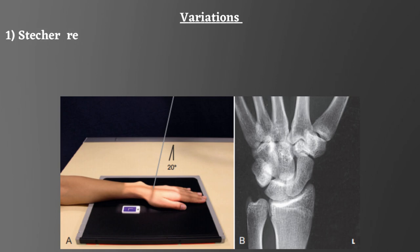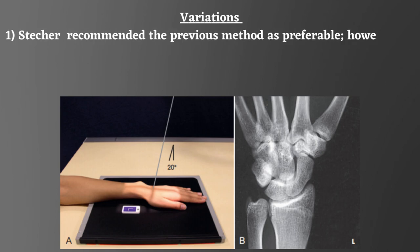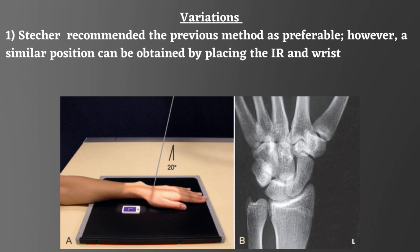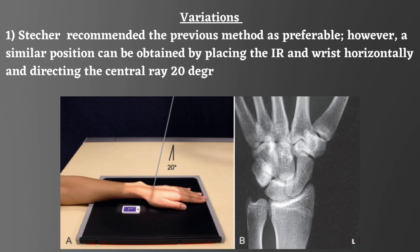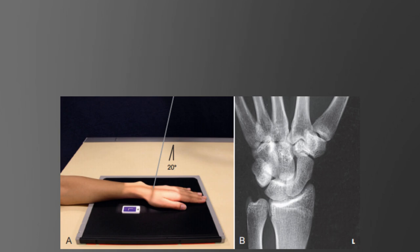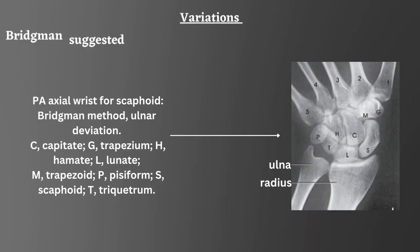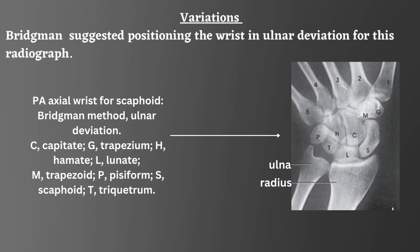Variations: Stecker recommended the previous method as preferable. However, a similar position can be obtained by placing the IR and wrist horizontally and directing the central ray 20 degrees toward the elbow.